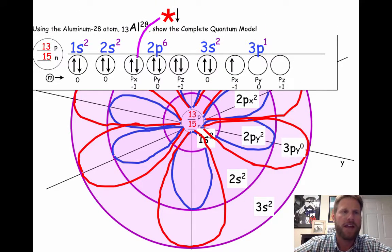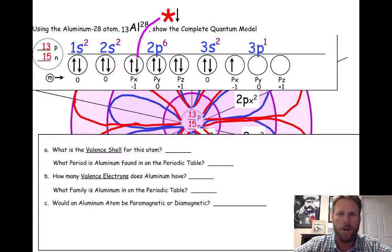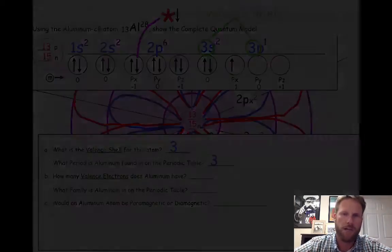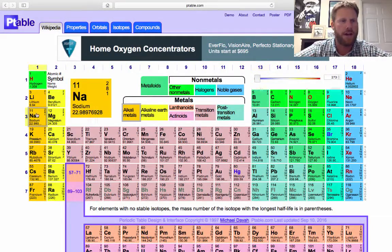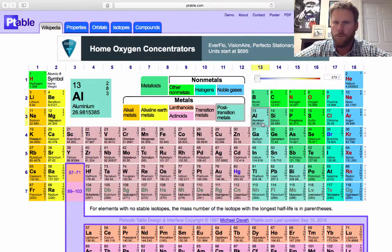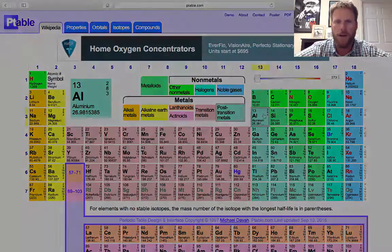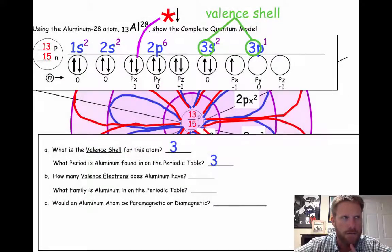So what is the valence of an aluminum atom? Well, that's the largest principal quantum number, which in this case is 3. If you look on the periodic table, aluminum is found in the third period. Notice aluminum is right here in period number 3 on the periodic table. Weird.